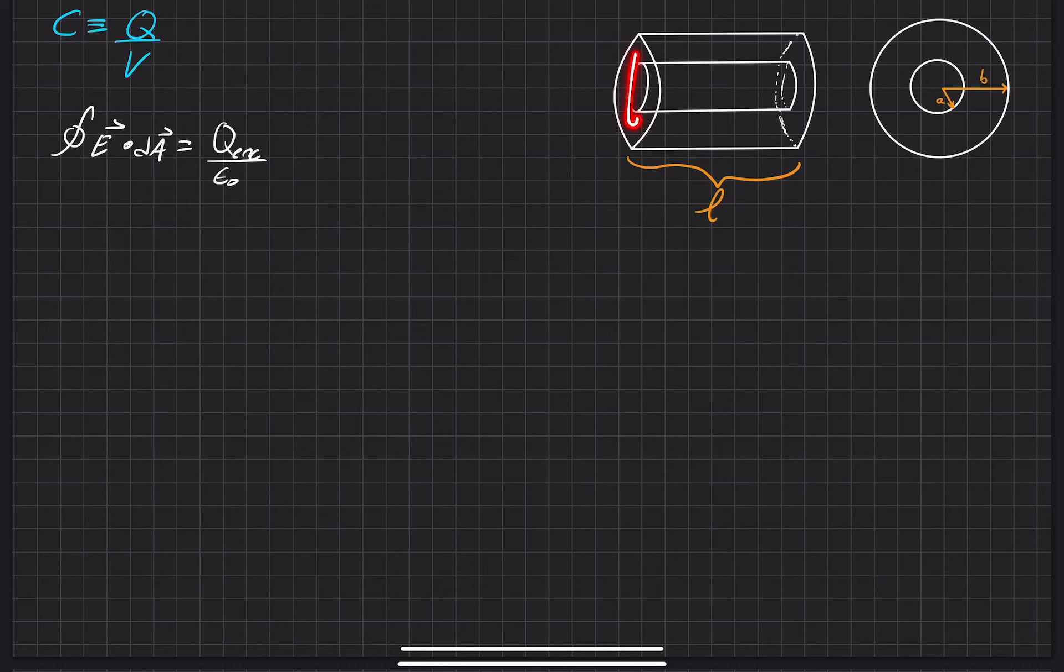If we look back over here, our Gaussian surface is going to have some radius R, but it's going to have a length L. It's going to completely encapsulate everything that we have over here.